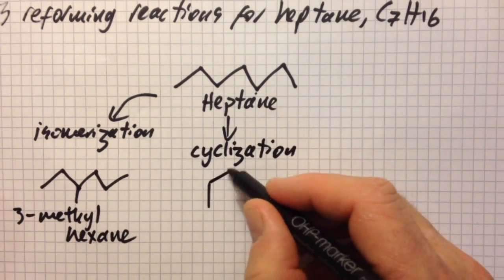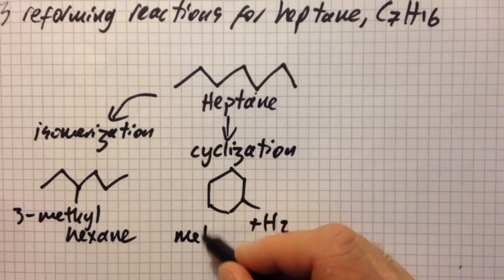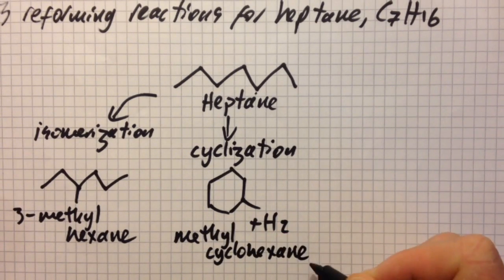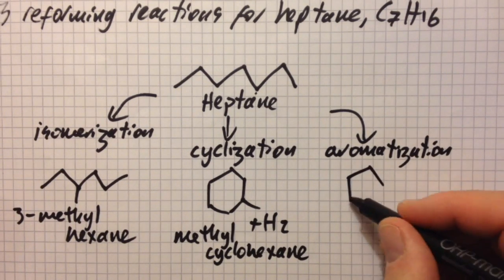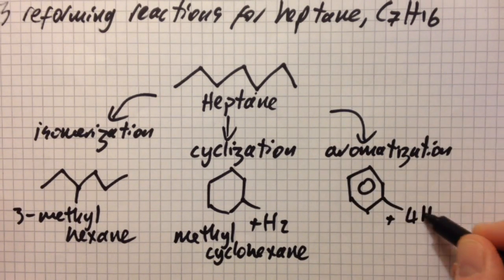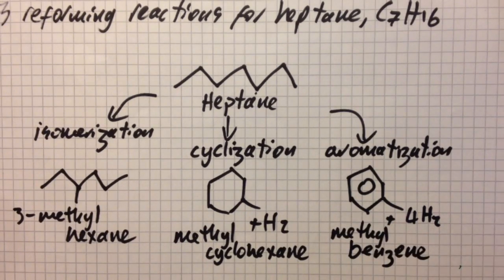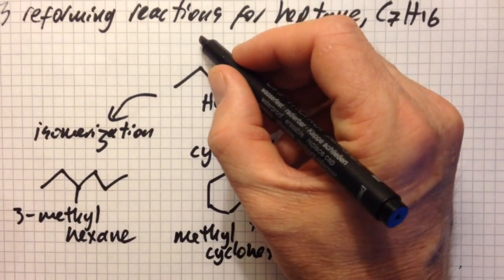Then I've got cyclisation. It's got to be six in a ring as far as I know. Five in a ring is unstable, unlikely as is four. And aromatisation again, that's got to be based on benzene. Don't forget the hydrogens.